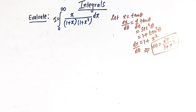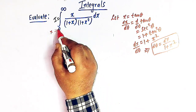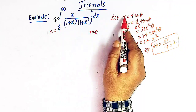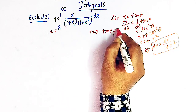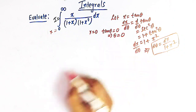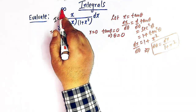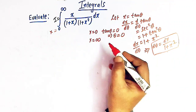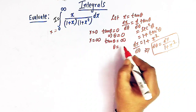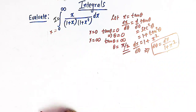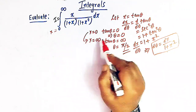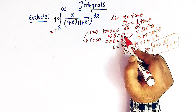The limits of integration vary from 0 to infinity. When x equals 0, tan θ equals 0, so θ equals 0. When x is infinity, tan θ equals infinity, so θ equals π/2. Therefore, when x varies from 0 to infinity, θ varies from 0 to π/2.